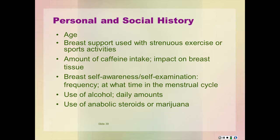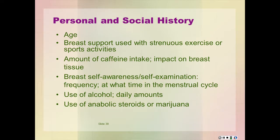As for the personal and social history: what is the age of the patient? Is appropriate breast support utilized with strenuous exercise or sports activities? How much caffeine does the patient consume and has it had any impact on breast tissue? Does the patient conduct breast self-examination, and at what time in the menstrual cycle? Is alcohol used, and how much? What about anabolic steroids or marijuana? Review the information on breast self-examination and breast self-awareness on page 463, box 16-2.